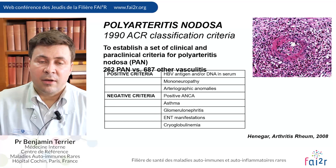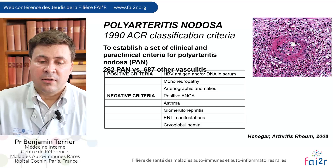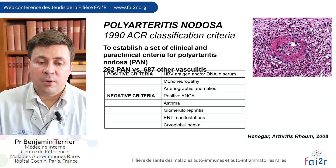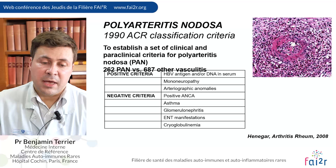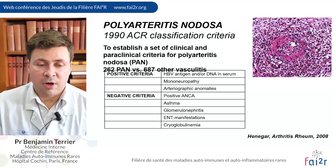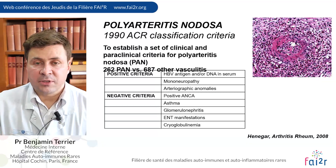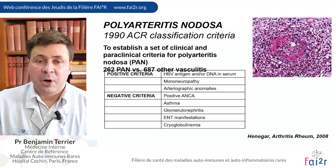Later, the French Vasculitis Study Group established some diagnostic criteria. Arteriographic abnormalities, mononeuropathy, and hepatitis B virus antigen or DNA in the serum were positive diagnostic criteria for PAN.